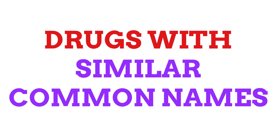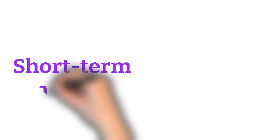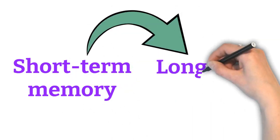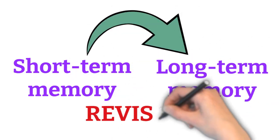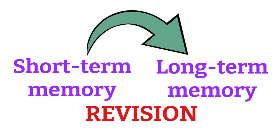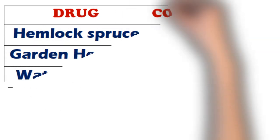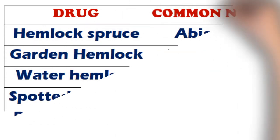We would like to remind you that to convert short-term memory to long-term, revision is very much necessary. What you read today, revise it for the next few days. So let's start. Hemlock spruce is the common name of Abies canadensis.